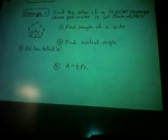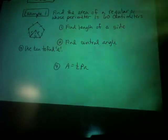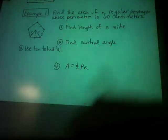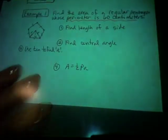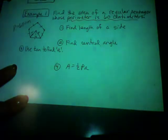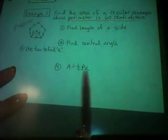Example one: find the area of a regular pentagon whose perimeter is 60 centimeters. You're going to need a calculator — we might have to use trigonometry or special right triangles. The only thing given is perimeter = 60 cm. I need to find the apothem.